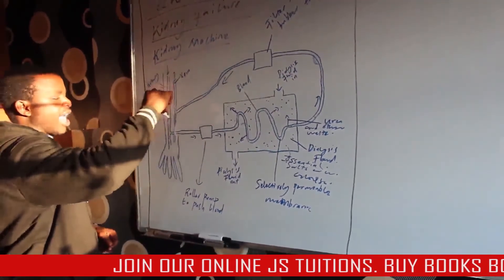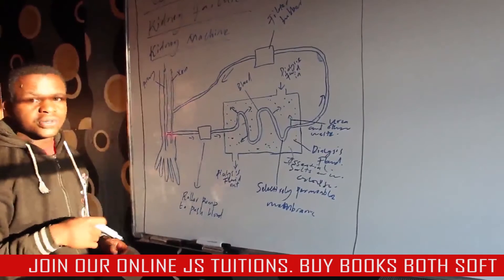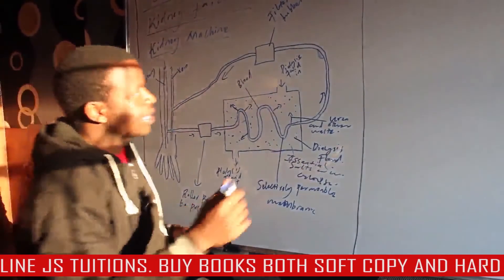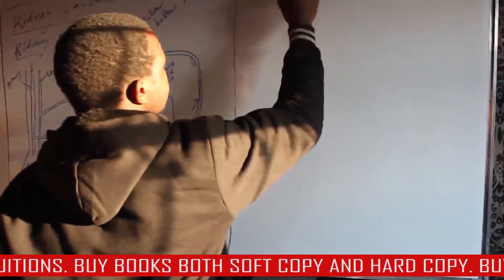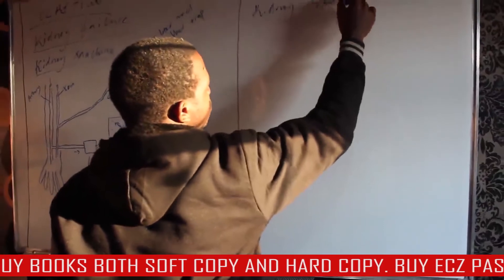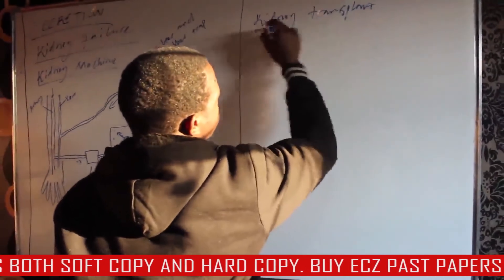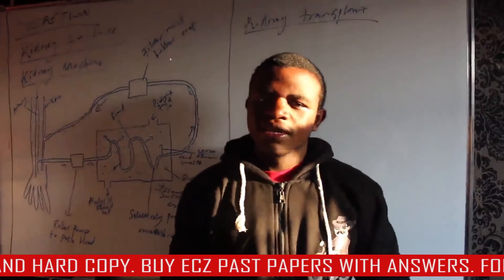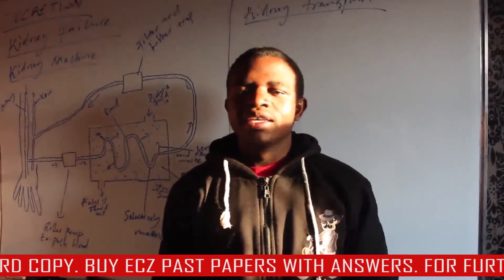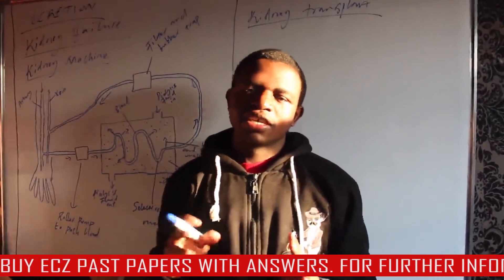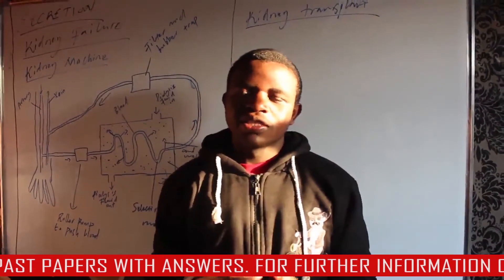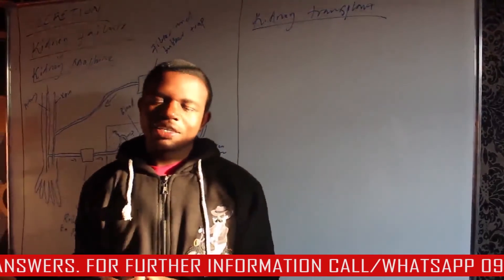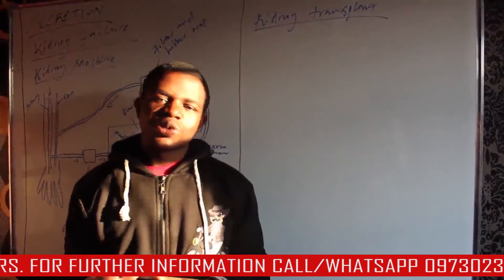After urea has diffused into the dialysis fluid, the blood passes through the tube, goes back into the veins, and from the veins it is taken back to the heart. A kidney transplant is the surgical removal of a healthy kidney from a donor, which is then given to the recipient.